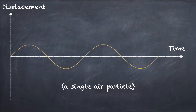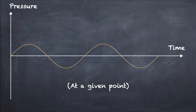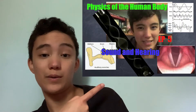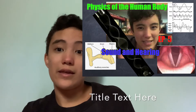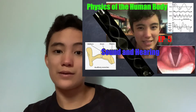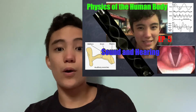Each air particle's displacement is sinusoidal over time, and the pressures in the air are sinusoidal over time at a given point and over length at a given time. Sound waves reach your ear and create waves on your eardrum — we talked about this in a previous video, which was pretty fun — and they create waves in the basilar membrane of your ear where little hair cells pick them up and tell you what you're hearing.